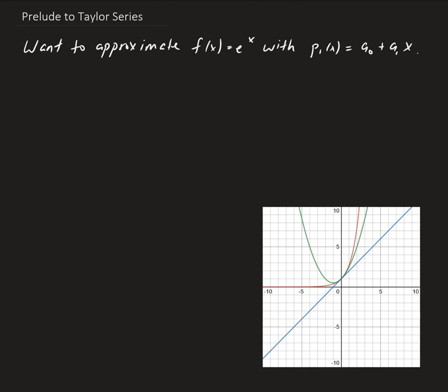So the requirement is: if we can somehow make sure that at least the polynomial at x equals 0 has the same value as the function at 0, that's a good starting point. And then the next thing we can do is look at the first derivative and require the first derivative at the same point to be equal to the derivative of f at that point. The point we're considering here is 0 — this is what we call an expansion point. So we're going to expand around 0.